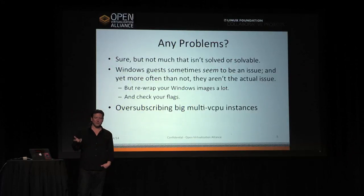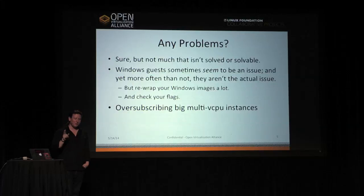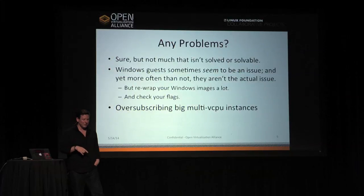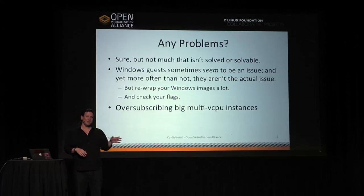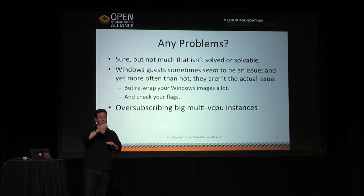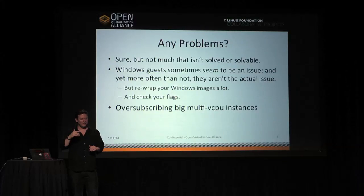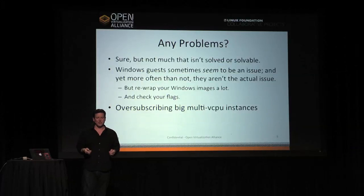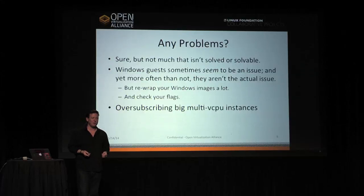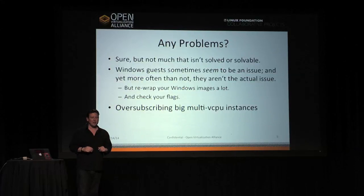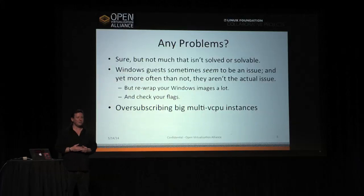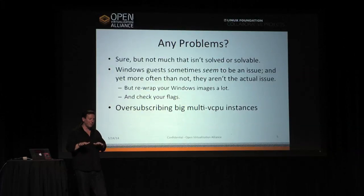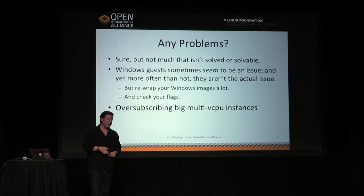If there's one thing to take away, it's this: we had a performance problem with Windows guests. We were using an image wrapped about six months previously that was being patched up to the current release using the Microsoft updater. One engineer got tired of patching instances every time he spun a new VM, so he rebuilt and rewrapped the image — and it actually got rid of the problem. It turns out Windows images are something you want to rewrap frequently: bring them up to the most up-to-date service packs, then add patches on top, because there's obviously some non-deterministic behavior going on.